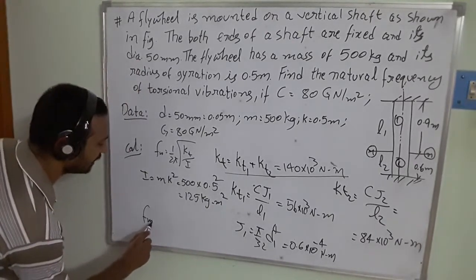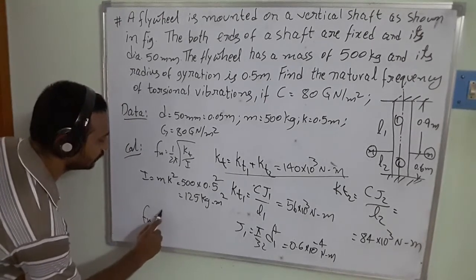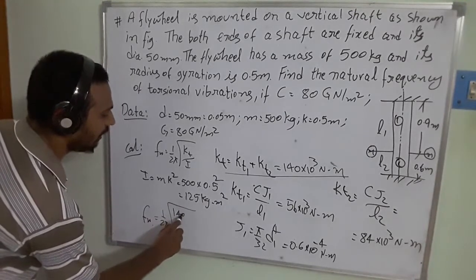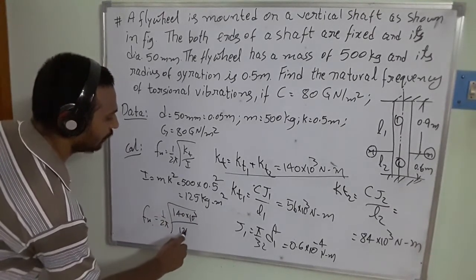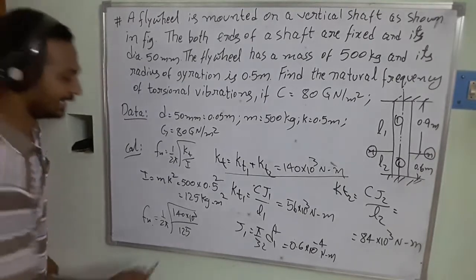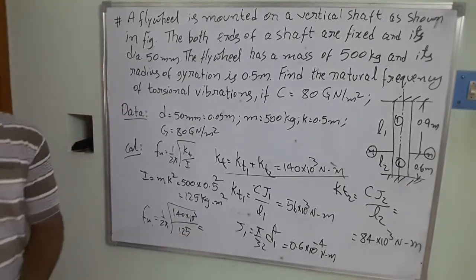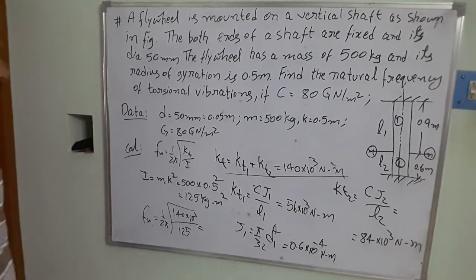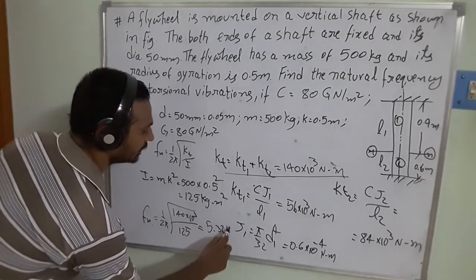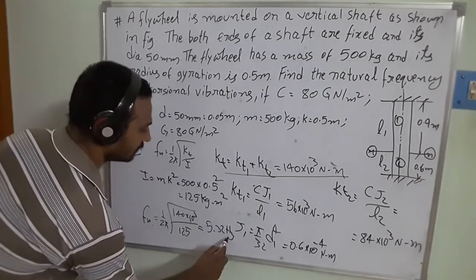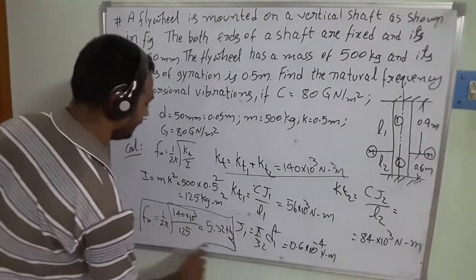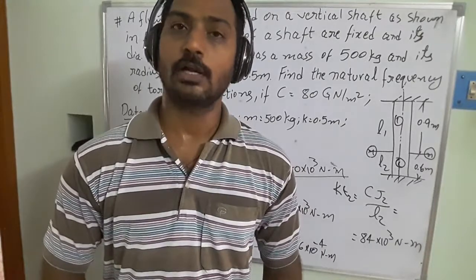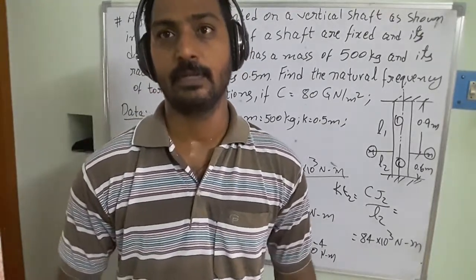Substituting into the natural frequency formula: fn = (1/2π) × √(kt / I) = (1/2π) × √(140 × 10³ / 125). The final answer is fn = 5.32 Hz. This is how we calculate the natural torsional frequency of the system. Thank you.